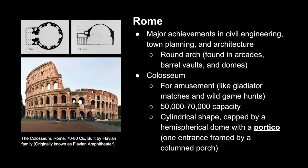Some major achievements during this time in Rome were civil engineering, town planning, and architecture. They made architectural advances with the round arch, found in arcades, barrel vaults, and domes. An arcade is a passageway with arch forms along one or both sides. A major architectural achievement was the Colosseum, created primarily for amusement like gladiator matches and wild game hunts. It could seat between 50,000 and 70,000. Its shape was comprised of a cylindrical form capped by a hemispherical dome — basically a half-sphere — with a portico, which is one entrance framed by a columned porch.